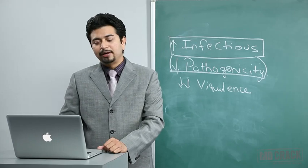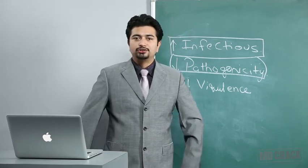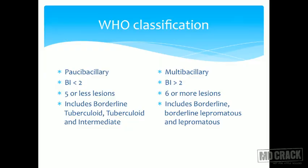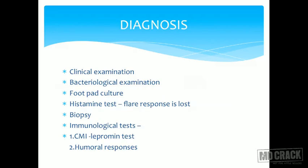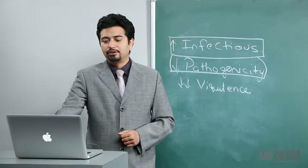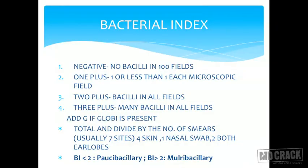Tuberculoid is the best type and lepromatous is the worst type of leprosy. The WHO classifies leprosy as paucibacillary and multibacillary: bacterial index less than two and five or fewer lesions defines paucibacillary, with the reverse being multibacillary. Diagnosis involves clinical examination, bacteriological examination, foot pad culture, histamine test, biopsy, lepromin test, and newer humoral response tests.